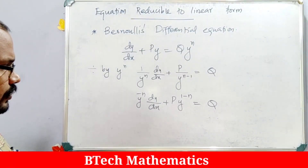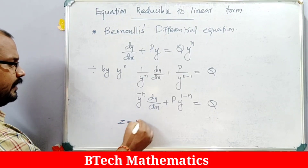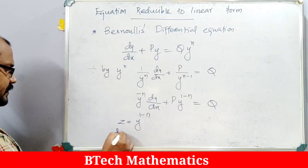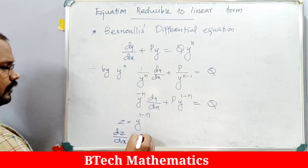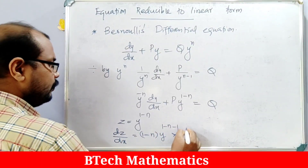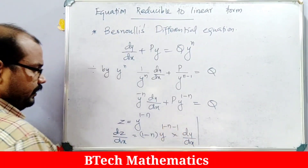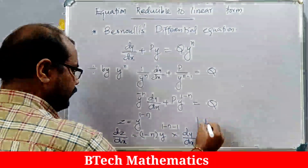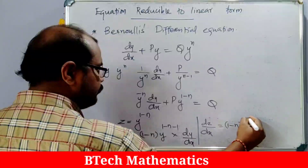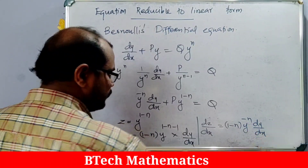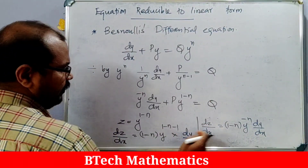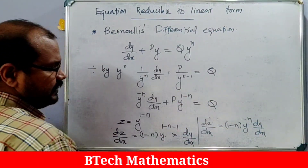Now we substitute z = y^(1-n). Finding its derivative: dz/dx = (1-n)·y^(1-n-1)·(dy/dx), which equals (1-n)·y^(-n)·(dy/dx). From this we can replace y^(-n)(dy/dx) with (1/(1-n))·(dz/dx).